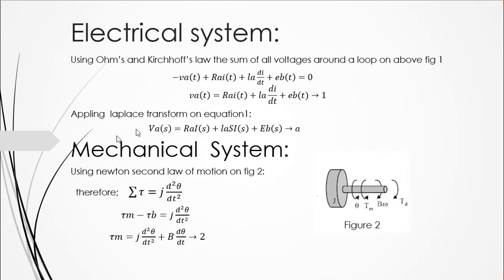From the mechanical side, these are the forces acting on the rotor. The summation of all torques equals J·d²θ/dt². TM and TB are opposite to each other, so we get: TM minus TB equals J·d²θ/dt². You can write this in the standard form as shown.